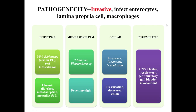Microsporidia are invasive — they infect enterocytes, lamina propria cells, and macrophages. Intestinal infections are 90% E. bieneusi infections seen in immunocompromised patients, or E. intestinalis, which produces chronic diarrhea, malabsorption, with mortality of 56%. Musculoskeletal symptomatology is caused by T. hominis or Pleistophora species, with patients presenting with fever and myalgia. Ocular presentation can be caused by V. corneae, Nosema corneum, or Nosema ocularum, producing foreign body sensation and decreased vision. Disseminated infection can involve CNS, ocular, genitourinary, respiratory, and gall bladder systems.